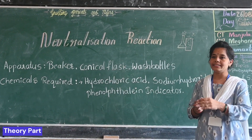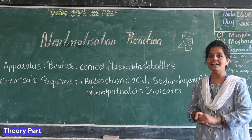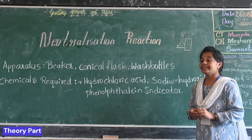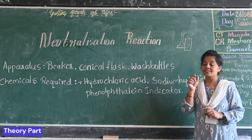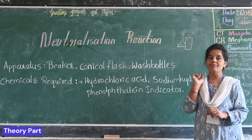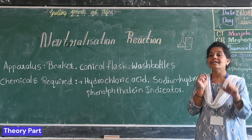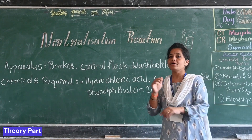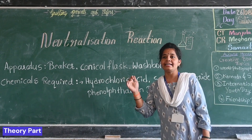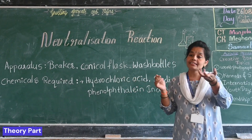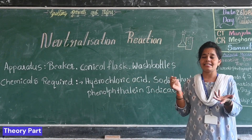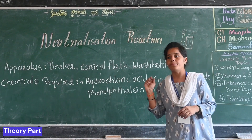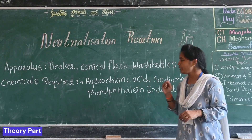This can be done by using indicators. The name itself tells us — indicators are chemicals which indicate whether a given substance is an acid or a base.